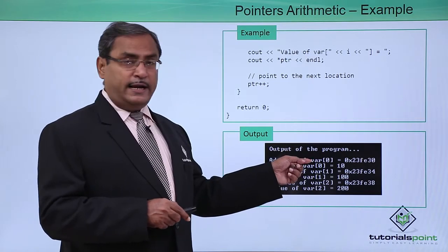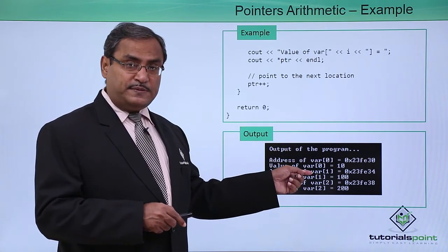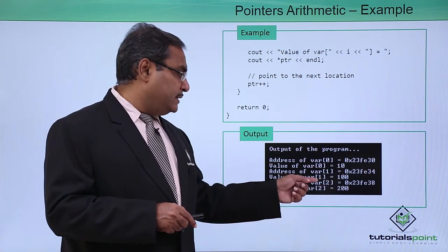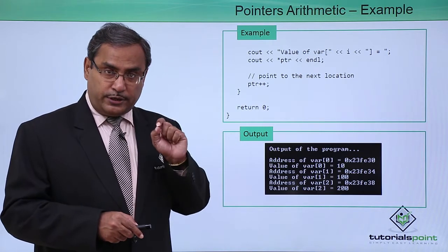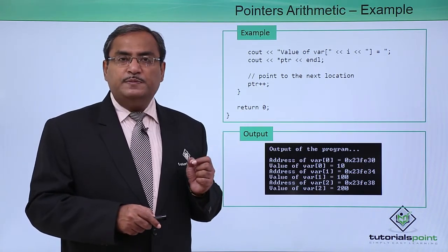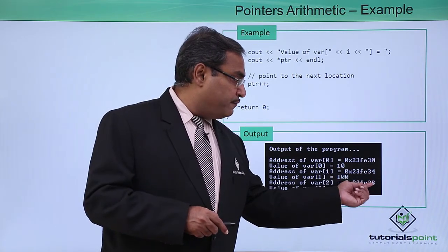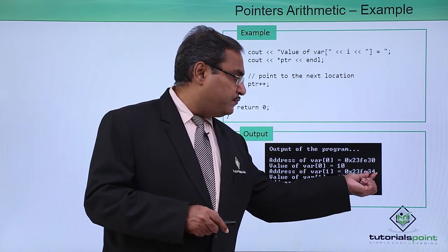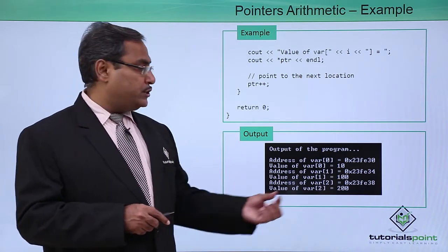Now, this is the starting address of the array, this is the address of subscript 1, and this is the address of subscript 2. It is very interesting, just note: we have done only PTR plus plus. PTR must be increased by 1, but here you see PTR has got increased by 4. 30 has become 34, has become 38, and they have been represented in hexadecimal notation.